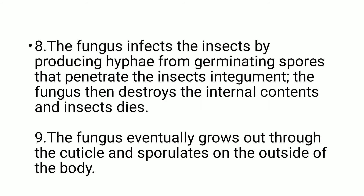At the initial stage, fungal spores get deposited over the body of the insect. Those spores germinate by producing a germ tube, which exerts pressure on the cuticle until it breaks down, allowing the fungus to enter the body and destroy internal contents. The fungus eventually grows out through the cuticle and sporulates on the outside of the body of the insect.